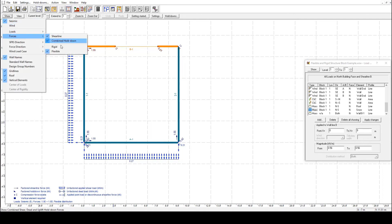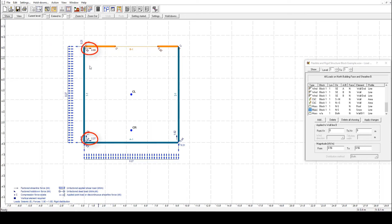However, for a rigid diaphragm distribution, the bottom shear line will attract more than three times the amount of load as shear line B1.